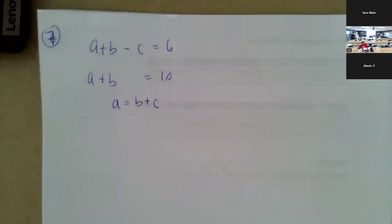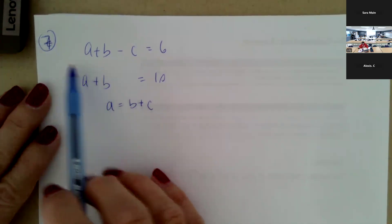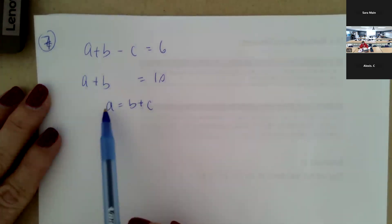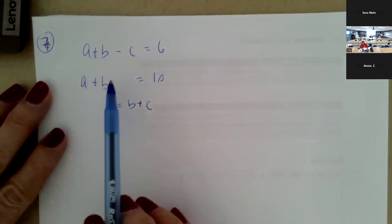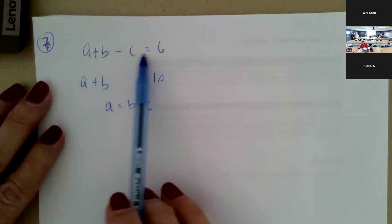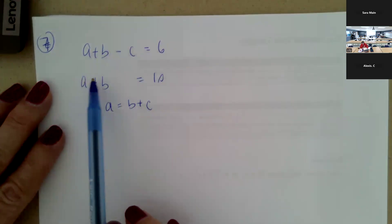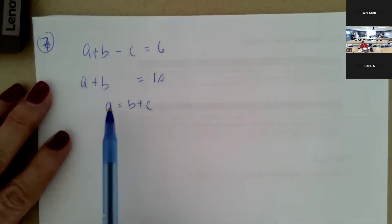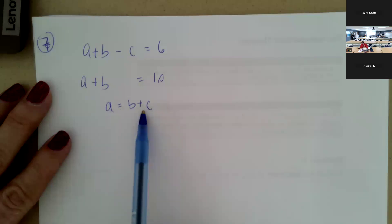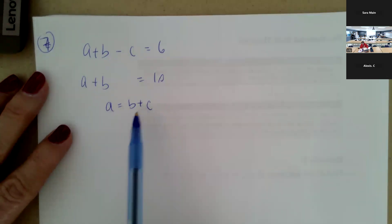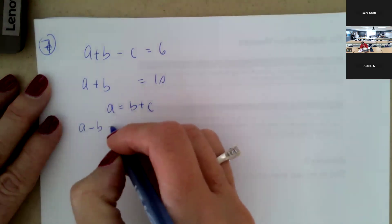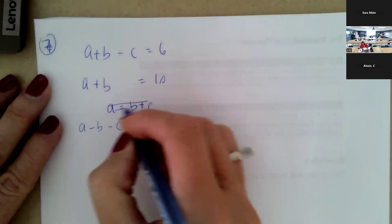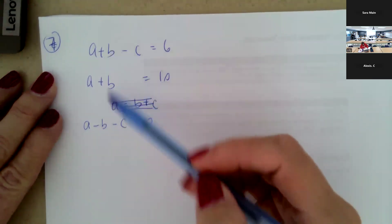Okay, welcome back. We are reviewing for the chapter four test and I am starting here on this video on number seven. Now we've moved on to have three variables that are missing, so we have an a, b, and c. Row one has a, b, and c missing; row two has a and b; and then the third row has a in terms of b and c. So I'm going to rewrite the third one as a minus b minus c equals zero, so we can see them all lined up here.